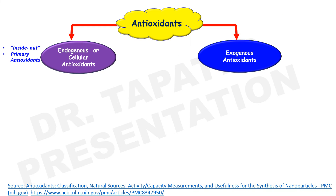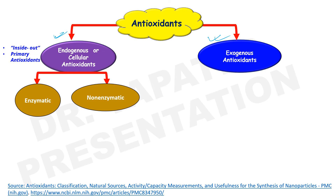Depending upon the sources of antioxidants, they can be categorized into two groups: endogenous or cellular antioxidants, and exogenous antioxidants. Endogenous antioxidants are produced inside the cell. They are also known as primary antioxidants or 'inside out.' Endogenous antioxidants can be categorized into two groups: enzymatic and non-enzymatic.